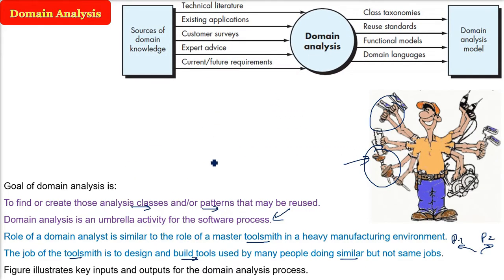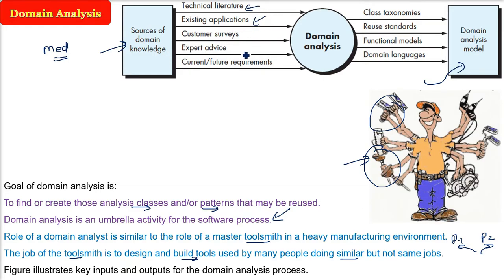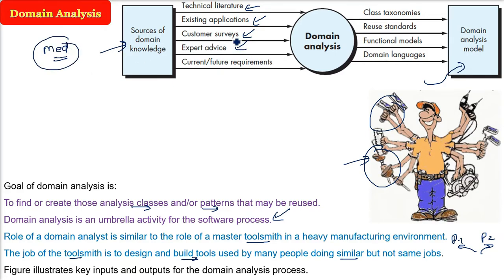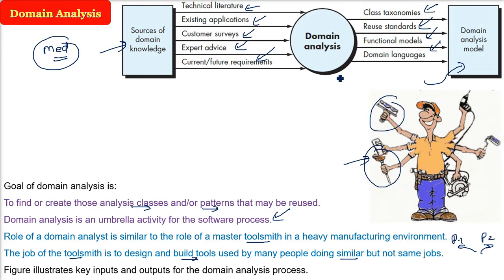If you see the inputs and outputs of domain analysis, the final output will be the domain analysis model. The sources can be immense. For example, in a medical science field, you are making software — what will be the technical literature? What applications are already being used? You can use medical science people, doctors, and supporting people for customer surveys. You can get expert advice or current and future requirements. Finally, you will get results as class taxonomies, reuse standards, functional models, and domain languages. These will be the outputs, and you will get the domain analysis model.